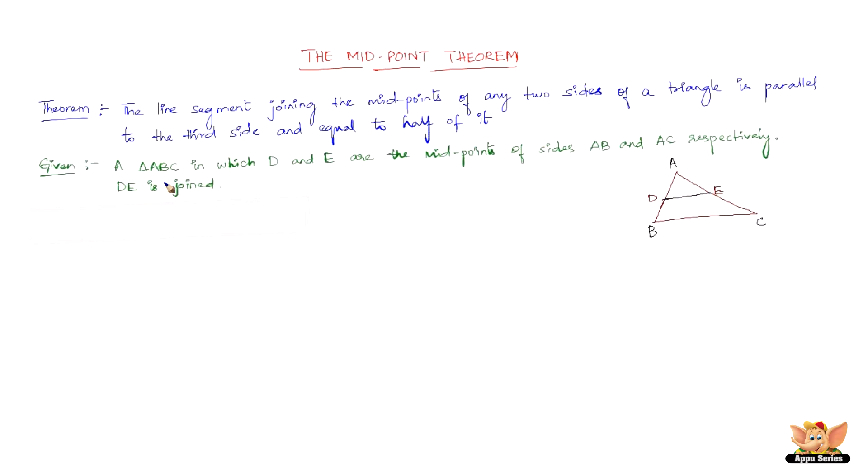Now what is given? Given is a triangle ABC in which D and E are the midpoints of sides AB and AC respectively. DE is joined. Now what do we have to prove? We need to prove that DE is parallel to BC and DE is equal to half of BC.